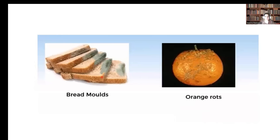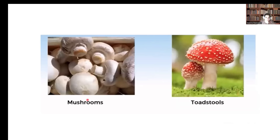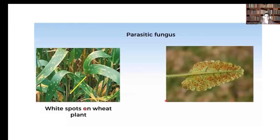We encounter fungal growth in our daily life. When you keep bread outside without storage, you see a black layer on top of the bread slices, which is the growth of fungus. When you keep fruits like oranges without refrigeration, you see small rot-like structures called orange rots. Mushrooms and toadstools also belong to Kingdom Fungi. Some fungi are parasitic, such as white spots on wheat plants and yellow or brown dots on leaves, which are fungal infections.